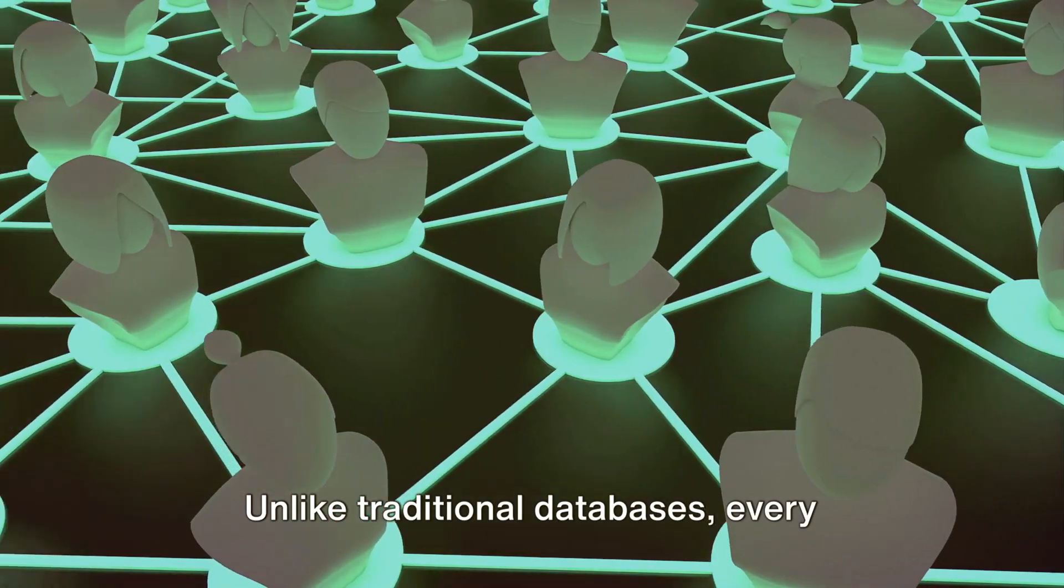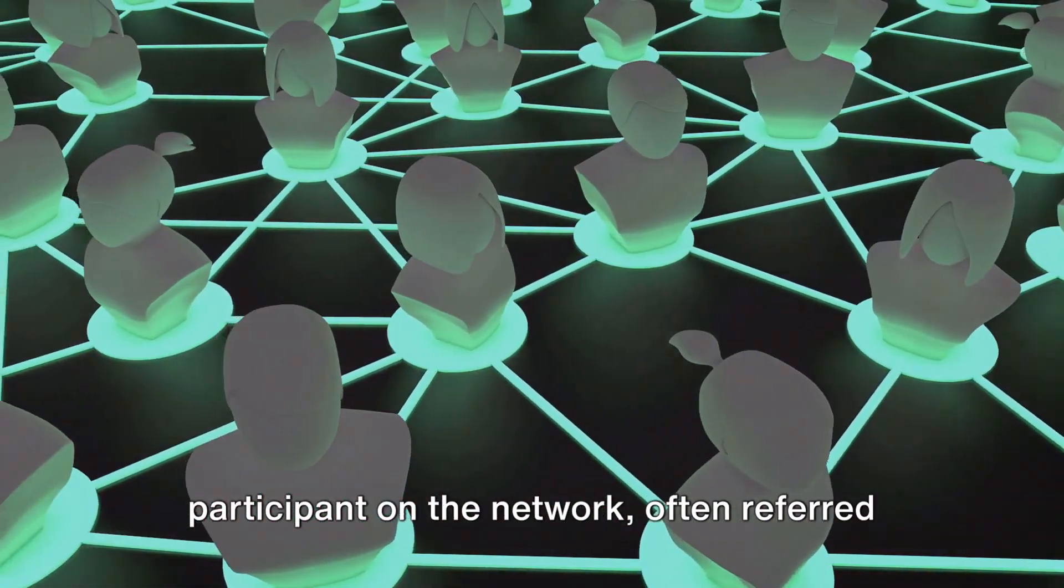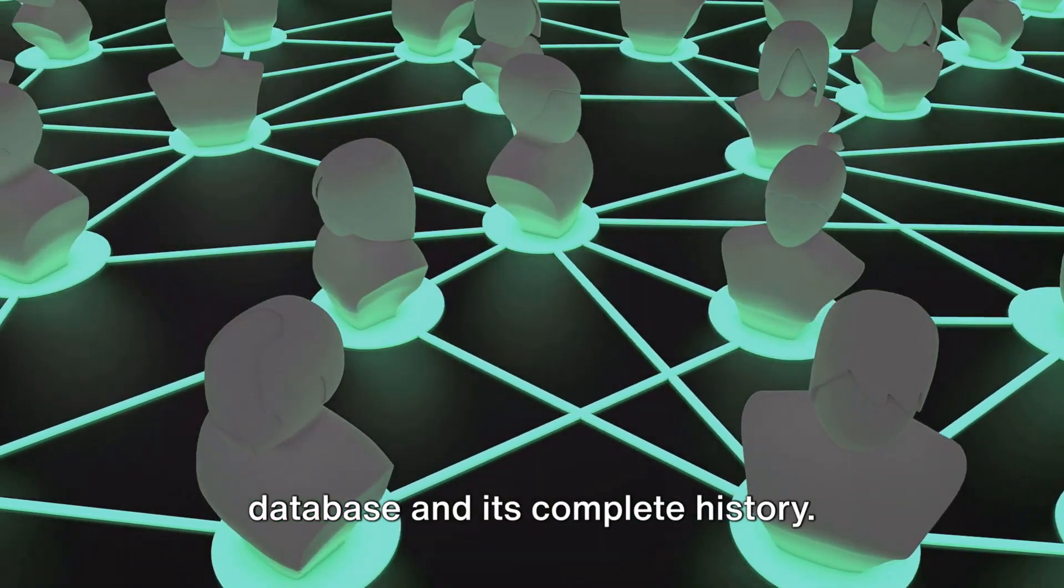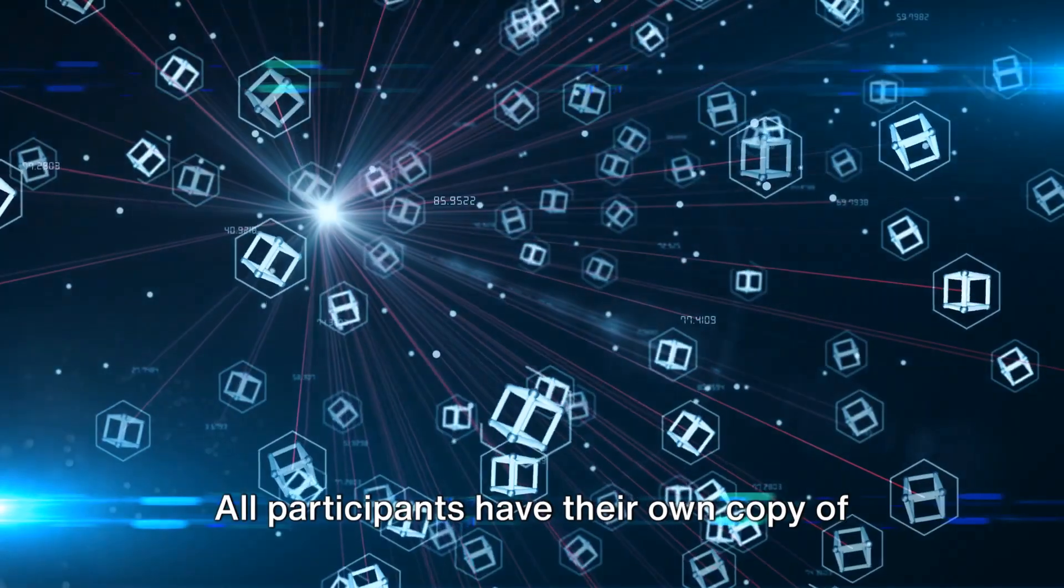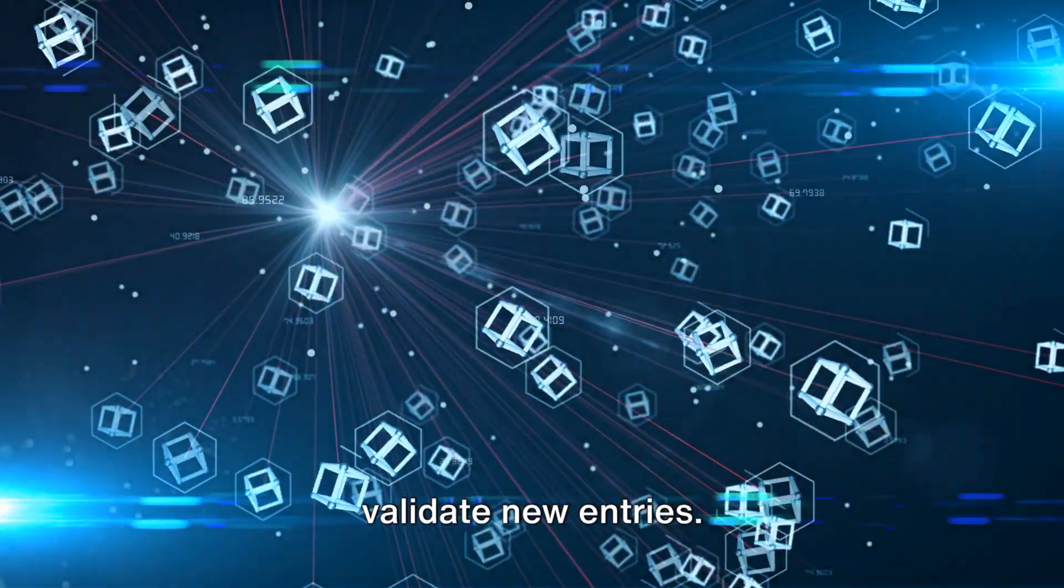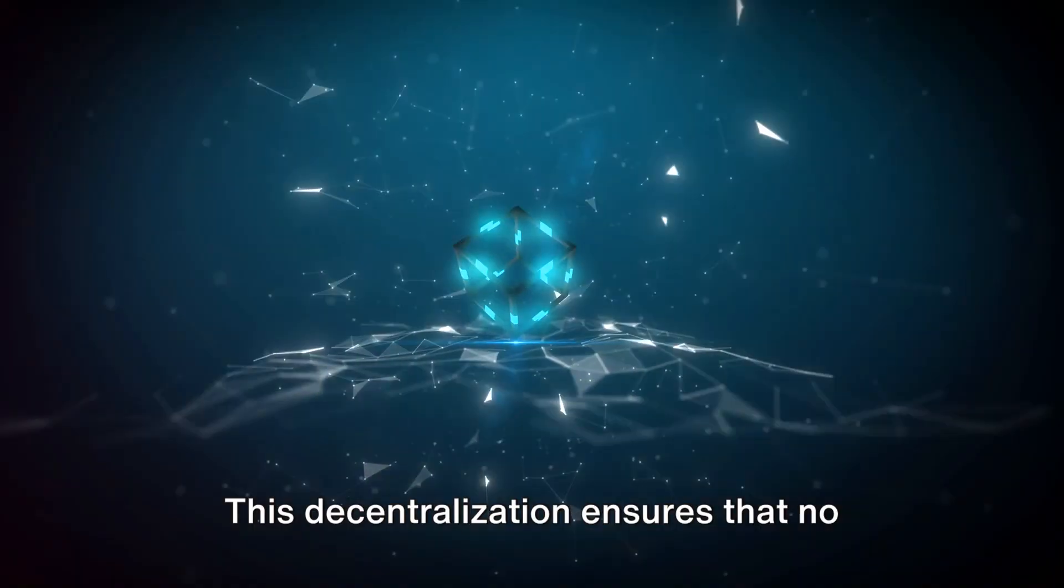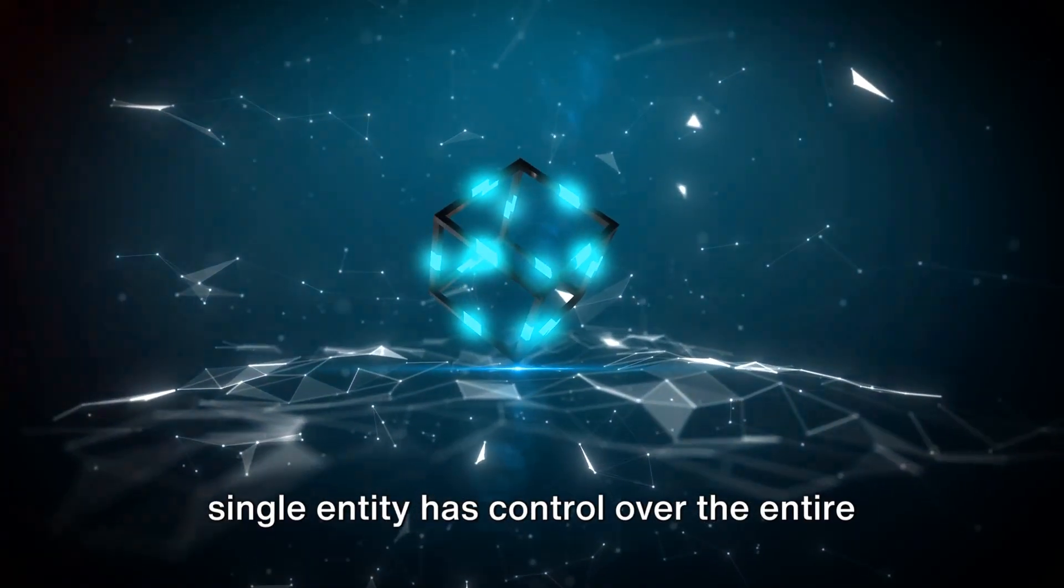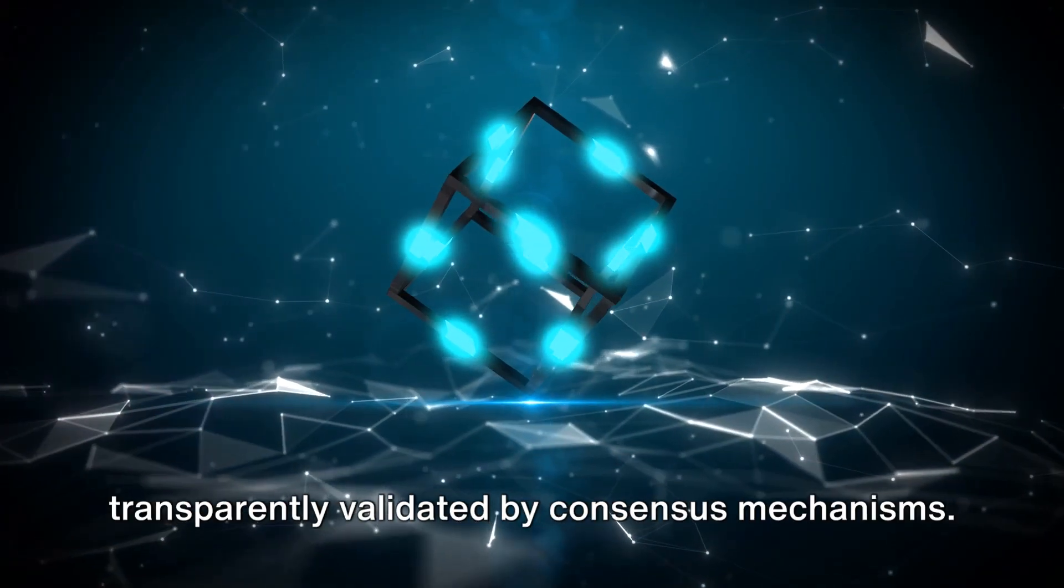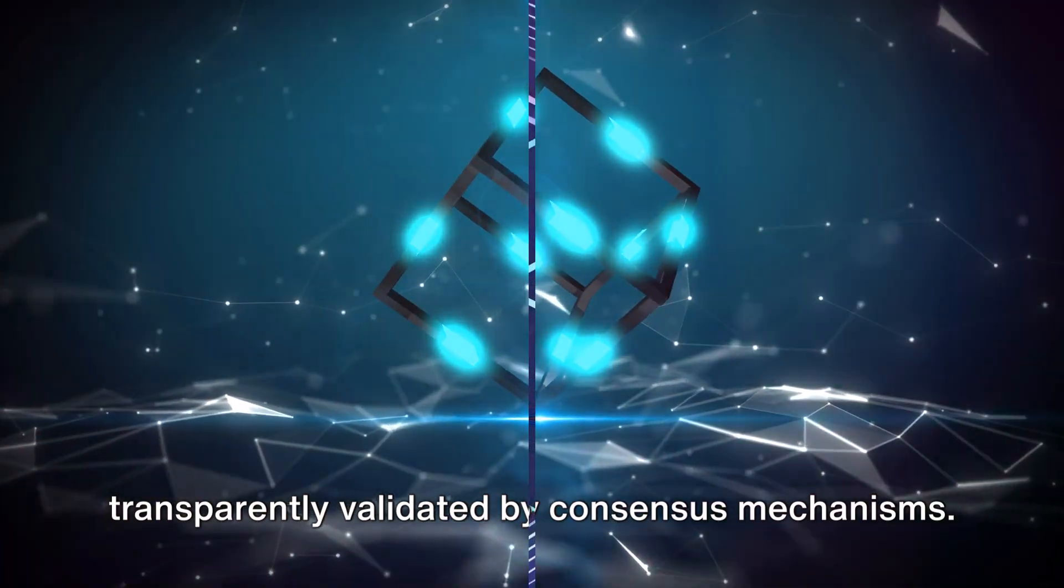Unlike traditional databases, every participant on the network, often referred to as a node, has access to the entire database and its complete history. All participants have their own copy of the blockchain and work to maintain and validate new entries. This decentralization ensures that no single entity has control over the entire blockchain, and all transactions are transparently validated by consensus mechanisms.